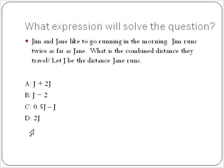Let's start at the bottom. 2j means 2 times j, or twice the distance Jane runs. Is that the combined distance? No, 2j is just as far as Jim runs, twice as far as Jane. This one says 0.5 times j, which is half the distance Jane runs minus the distance Jane runs. That's not going to help us. How about Jane's distance divided by 2? Again, that's not what we're looking for.